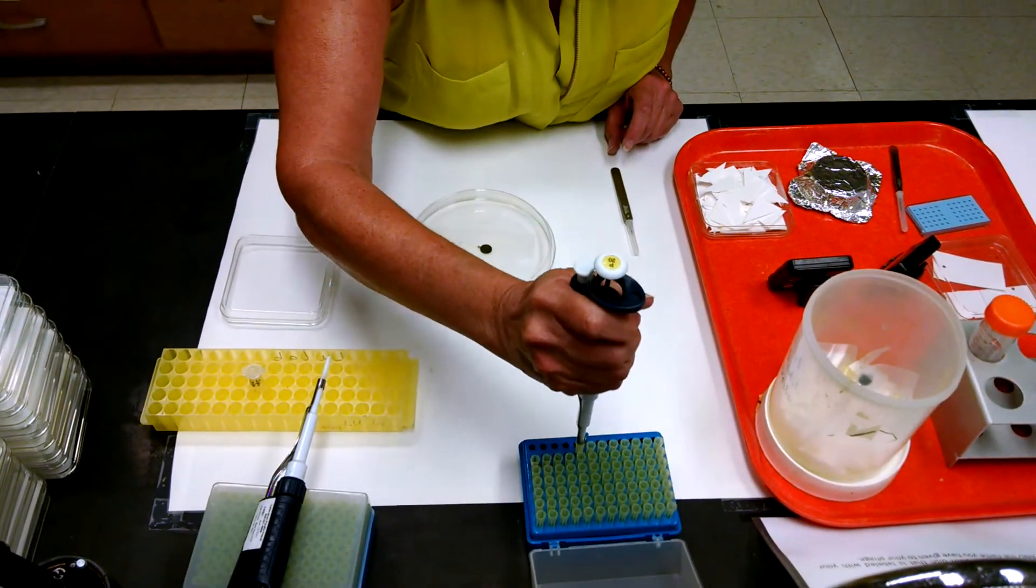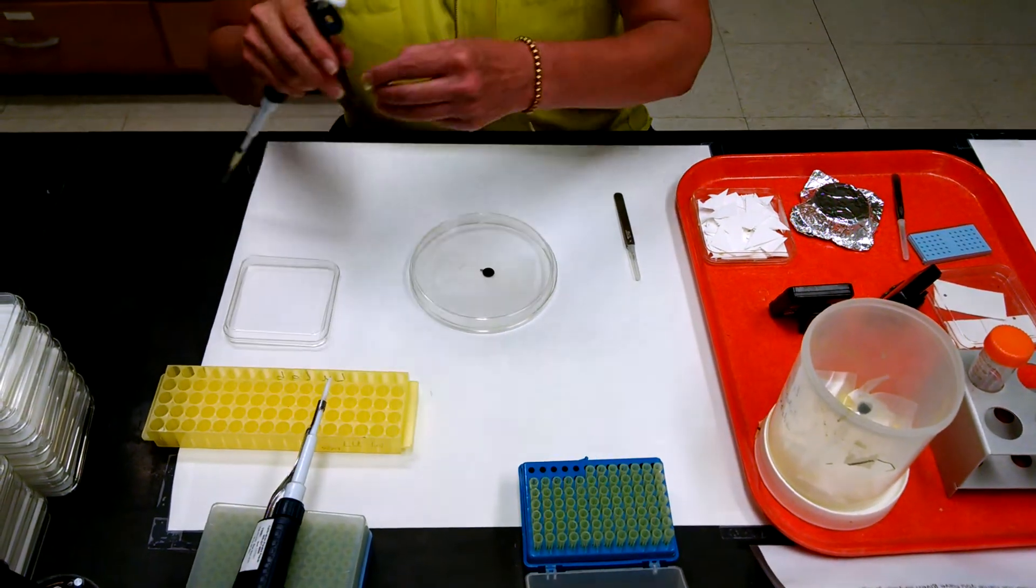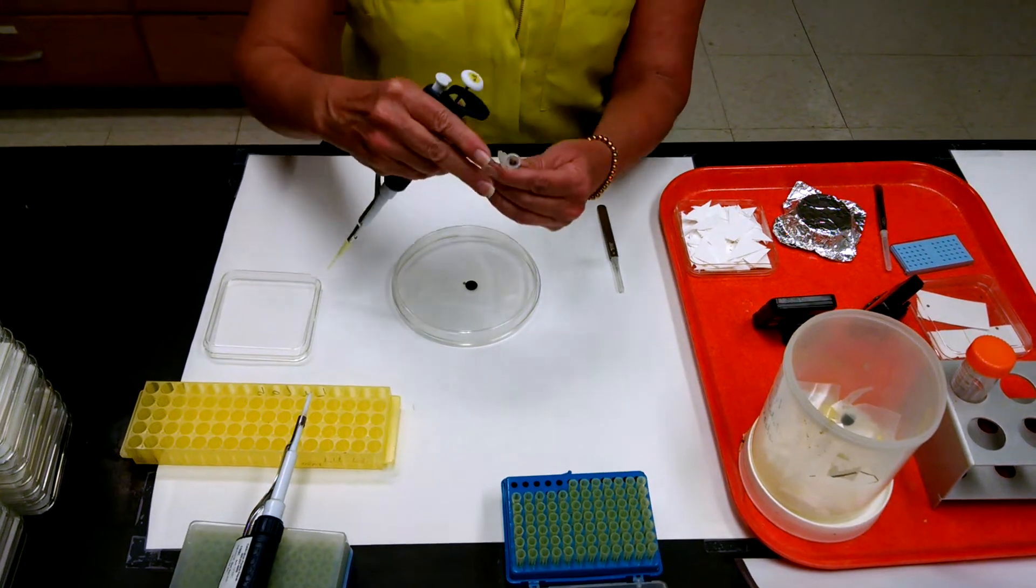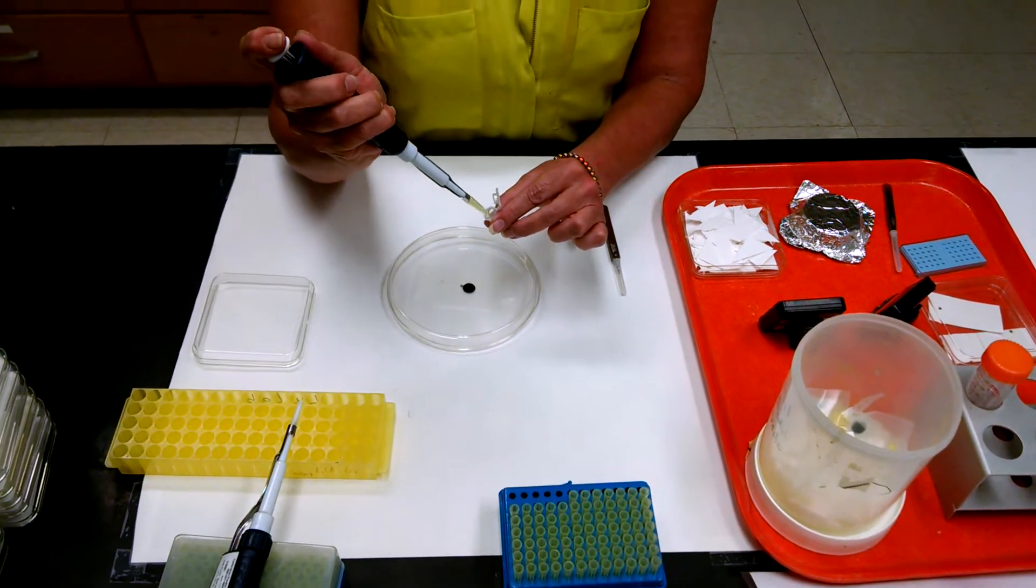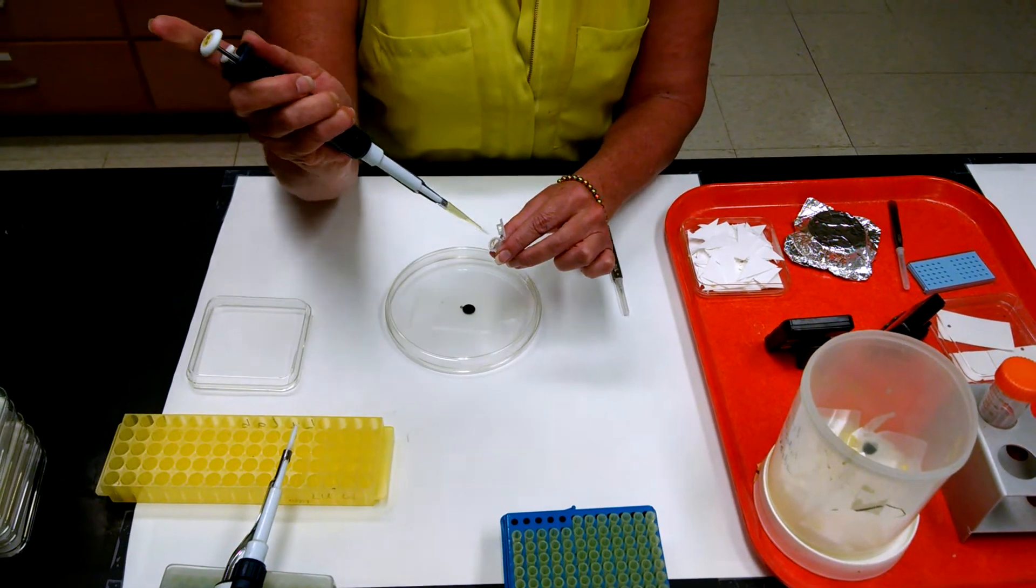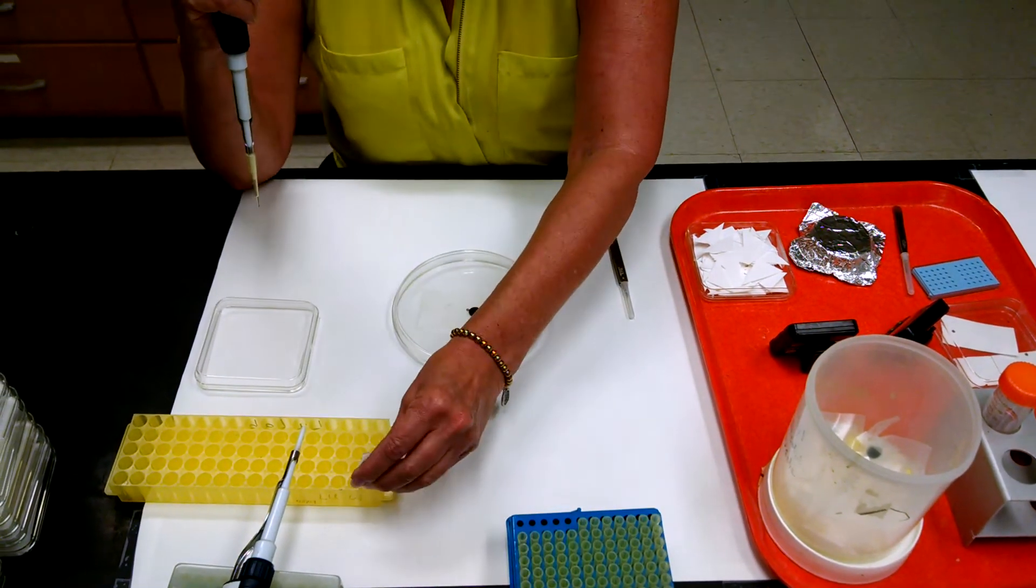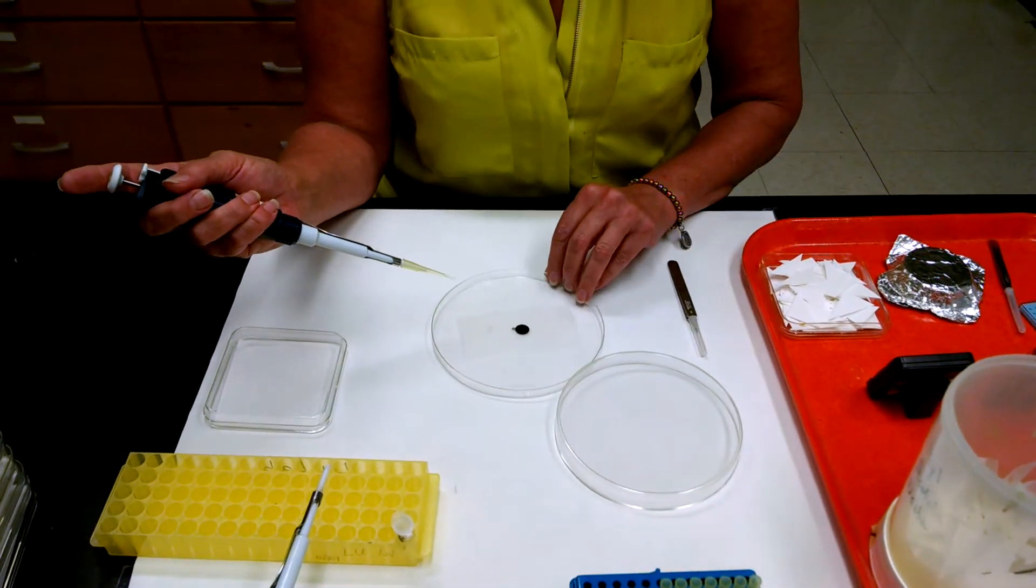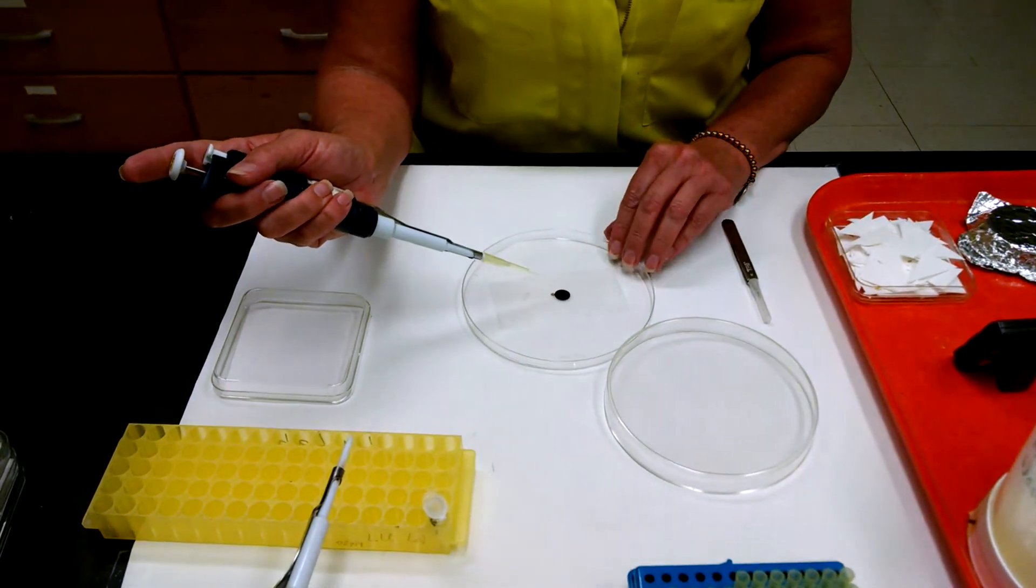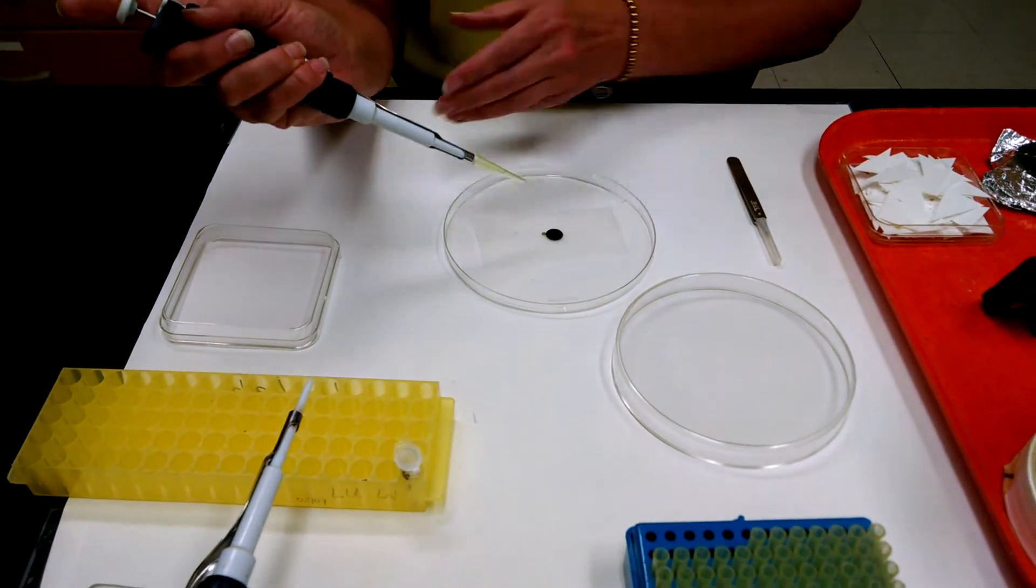Today we're going to negatively stain a grid that has a sample of phage on it. So I get my phage, I have 10 microliters in a pipette, I draw it up, and I'm going to put it on this grid. The grid is the little copper one, not the big black one.